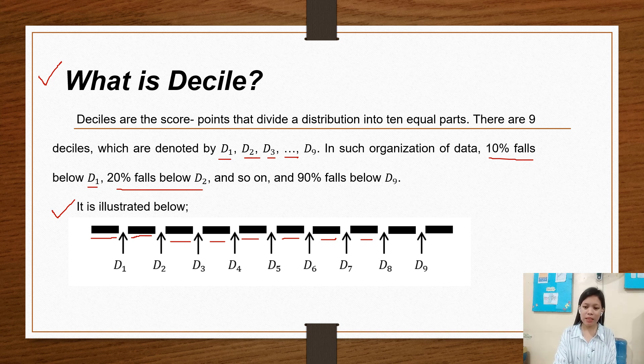D7 to D8 is 10%, D8 to D9 is 10%, for a total of 100%. Decile is divided into 10 equal parts.